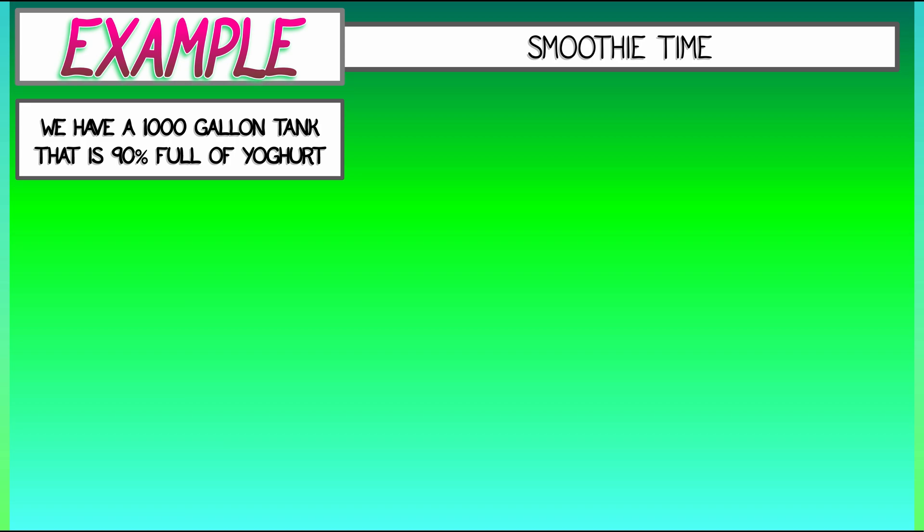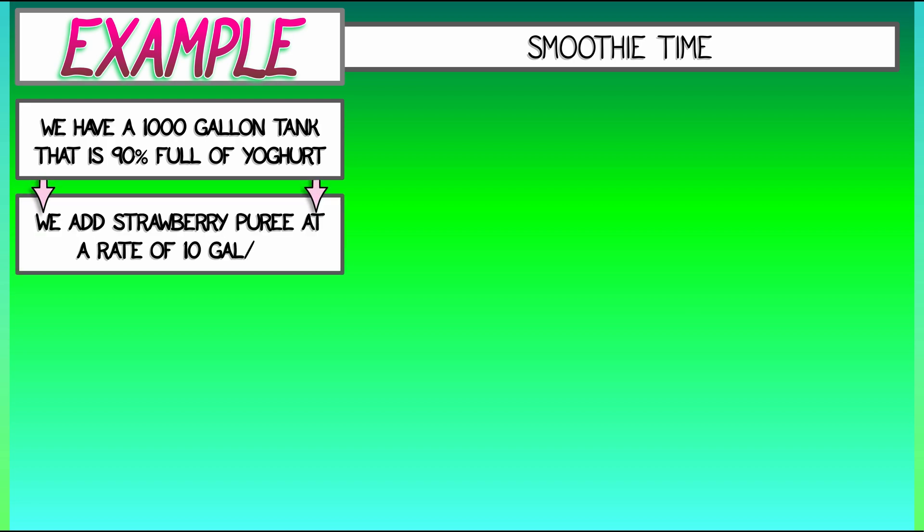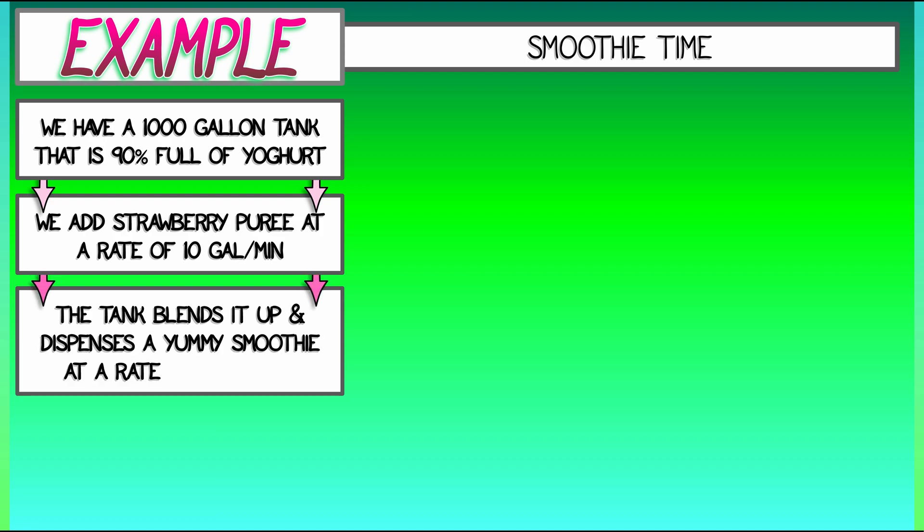But what we do is we add strawberry puree to that yogurt in the tank at a rate of 10 gallons per minute. That tank, it blends it all up, makes a nice smoothie, and it dispenses that blended smoothie at a rate of 5 gallons per minute.